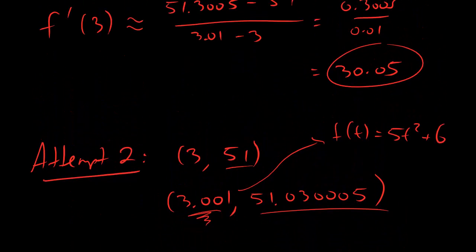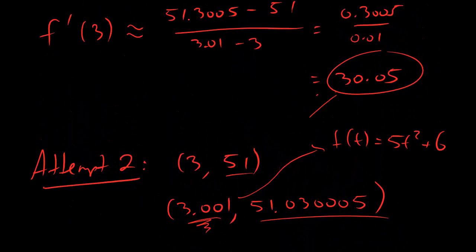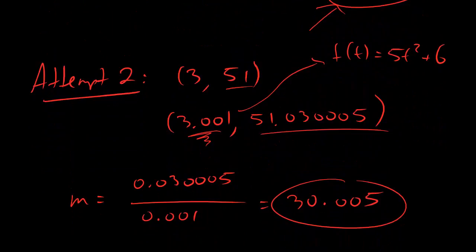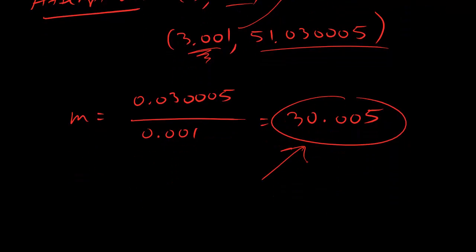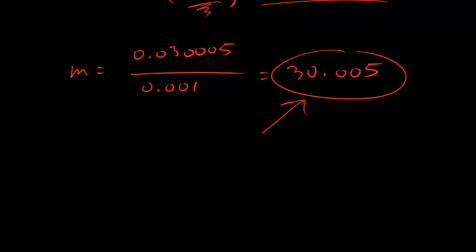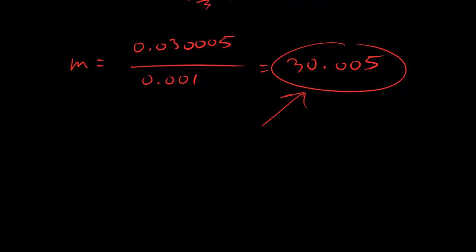All right. So check it out, dudes. We picked a close-by point, and we got 30.05. We picked an even closer point, and we get 30.005. So at this point, you might guess that if you keep going, and you keep picking points that are closer and closer to 3, then what you find out is that the true derivative is just equal to plain old 30, with no decimal point crap. And in fact, this is true. Yay! And everyone's happy.